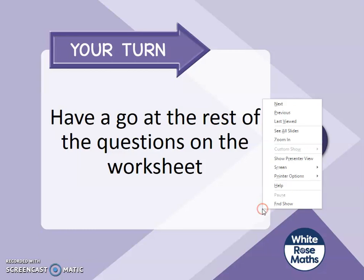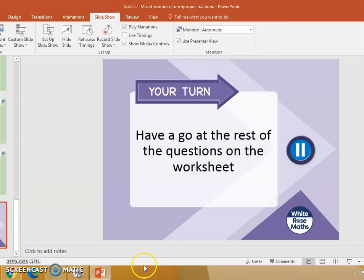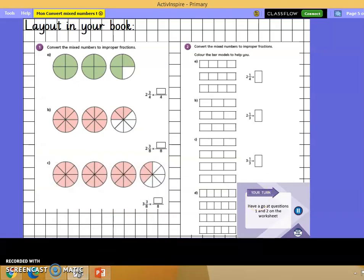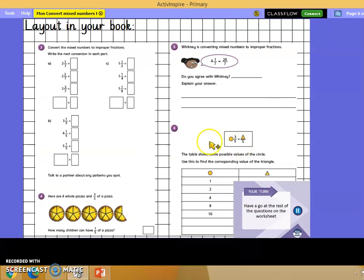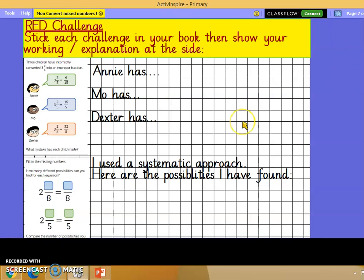Your turn, please, to have a go at the rest of the questions on your worksheet. I'd like you again to cut and stick into your book nice and neatly using the lines to guide you. Remember, you can always draw any of them to help you do your working out. When you've done that, red challenge for anyone who is ready, but definitely red group. You're going to stick each challenge into your book. Then show your working and explanation at the side.